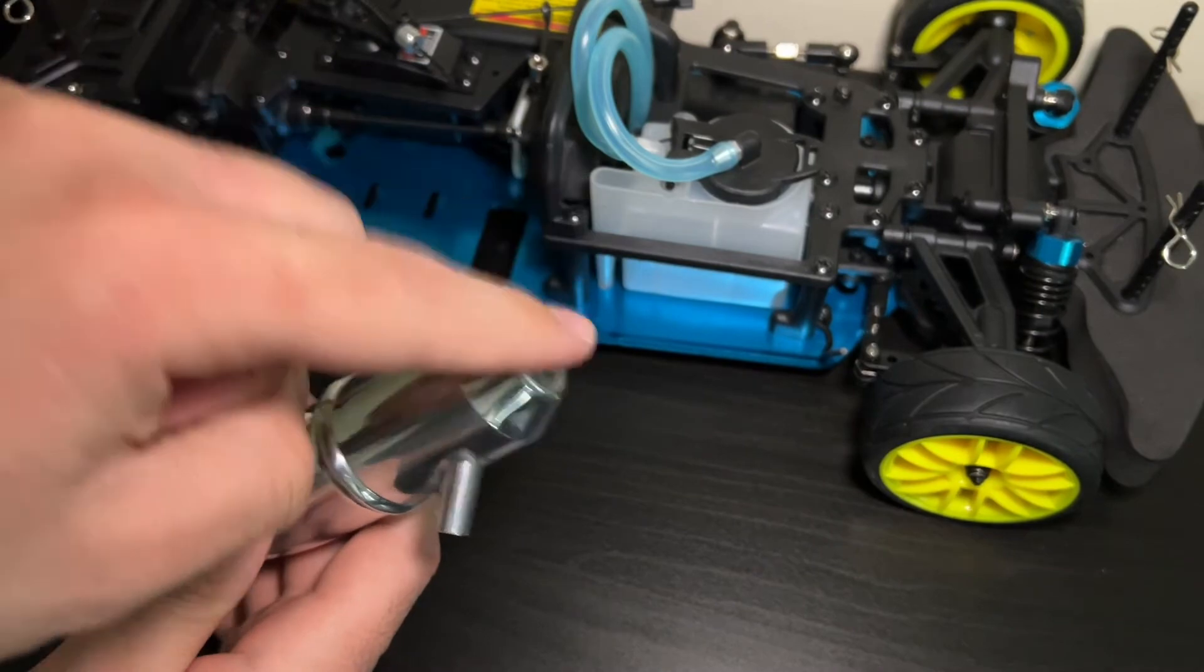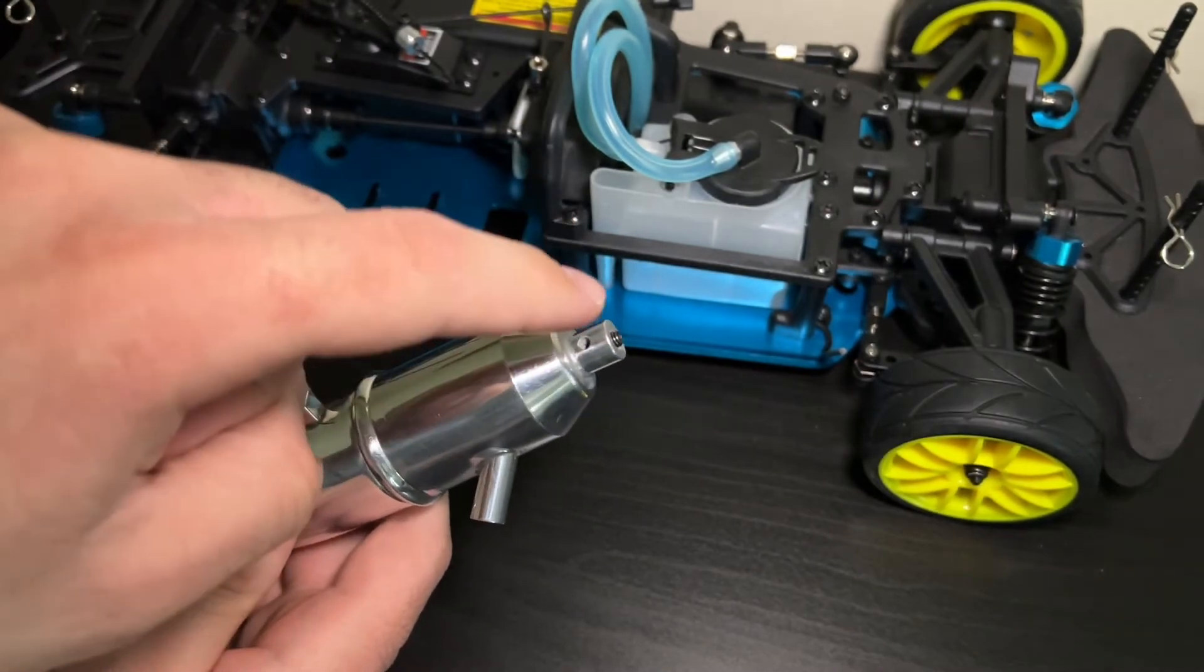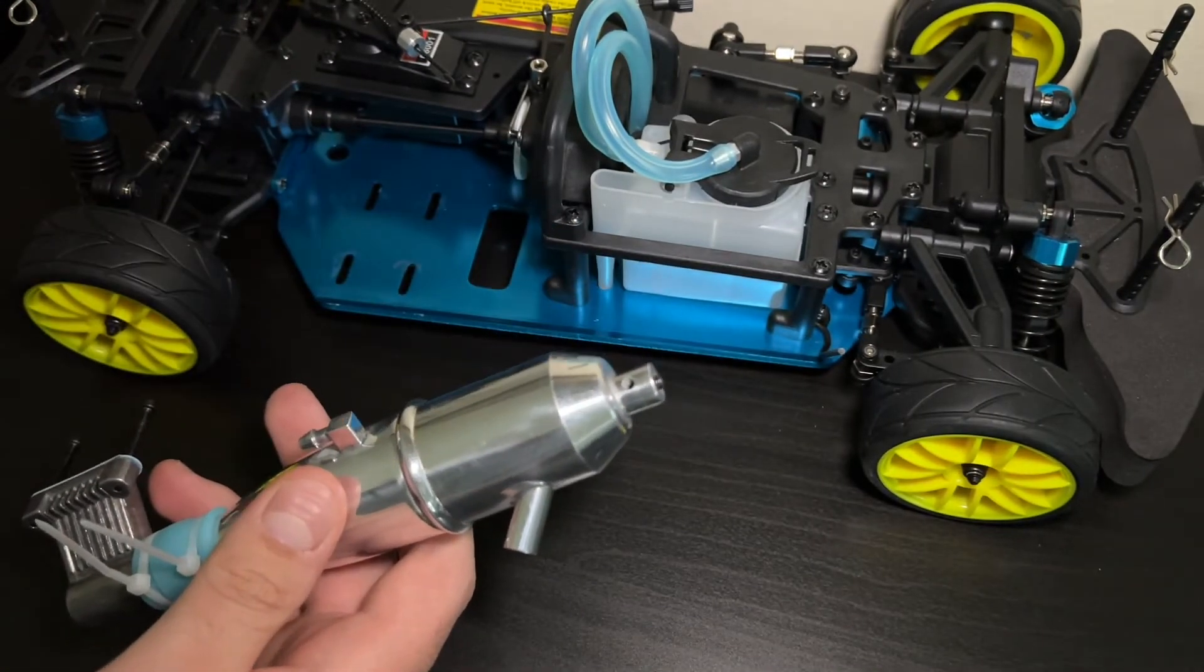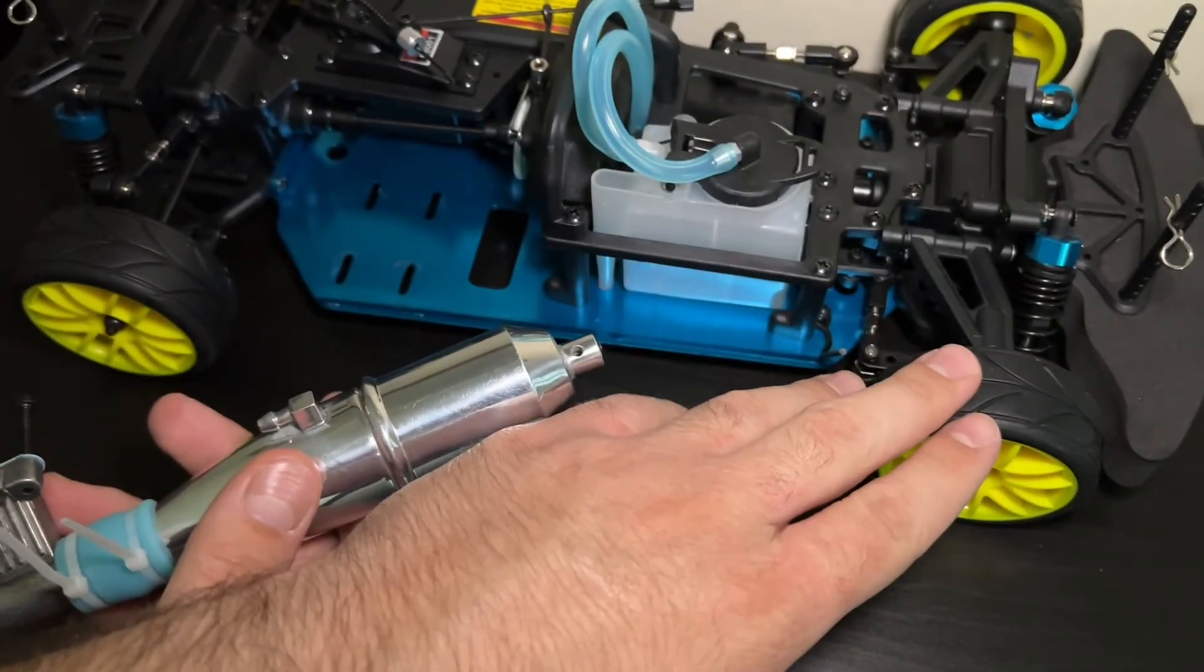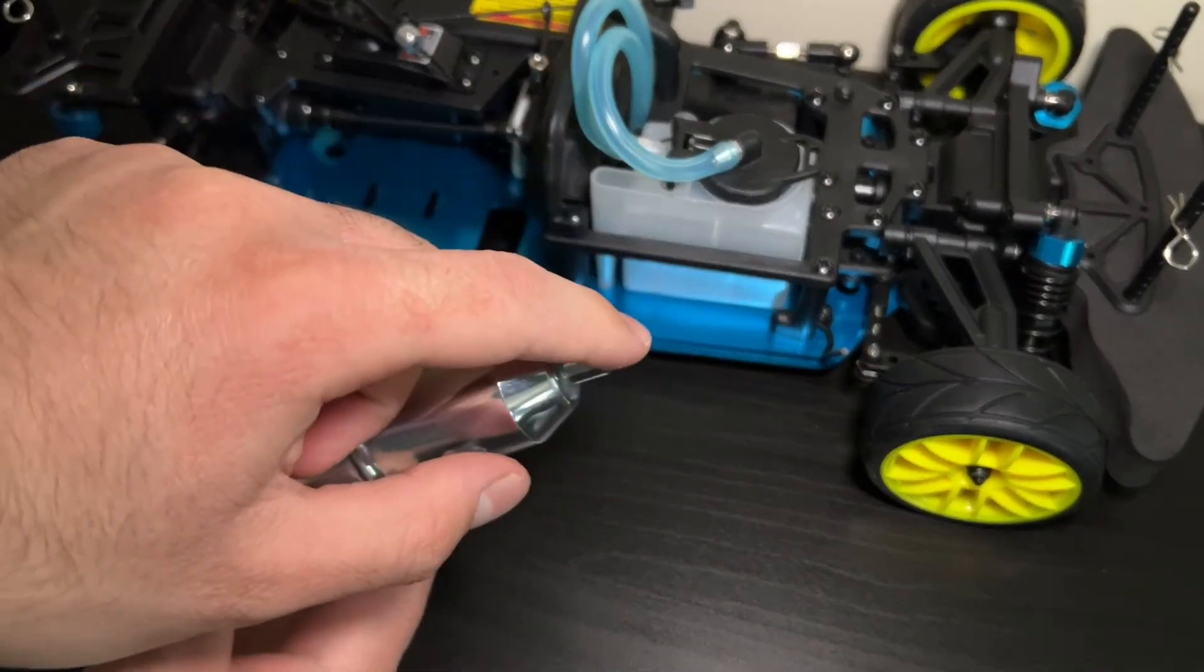Now due to the fact that the set screw is on the top of the exhaust and not on the side like my old plastic one, I unfortunately need to remove this front wheel in order to screw this set screw in place.